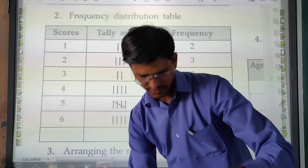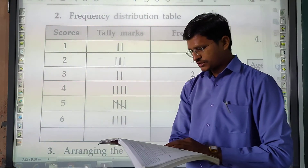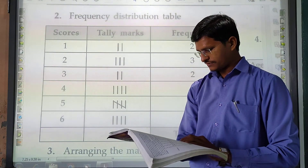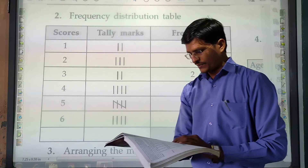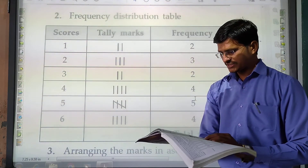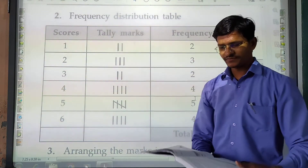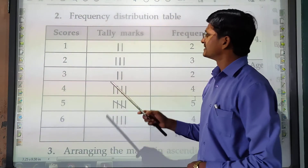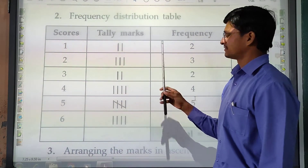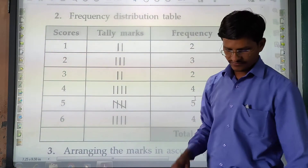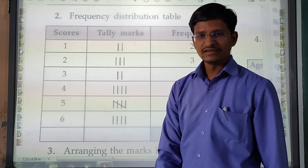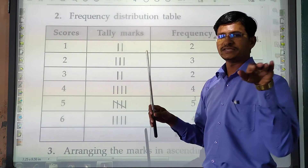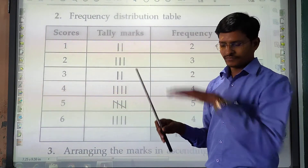Question number 2: A die was thrown 20 times and the following scores were obtained. We have to prepare a frequency distribution table. The method is the same — first arrange in ascending order. The smallest score is 1 and the highest is 6, so the interval is 1 each.